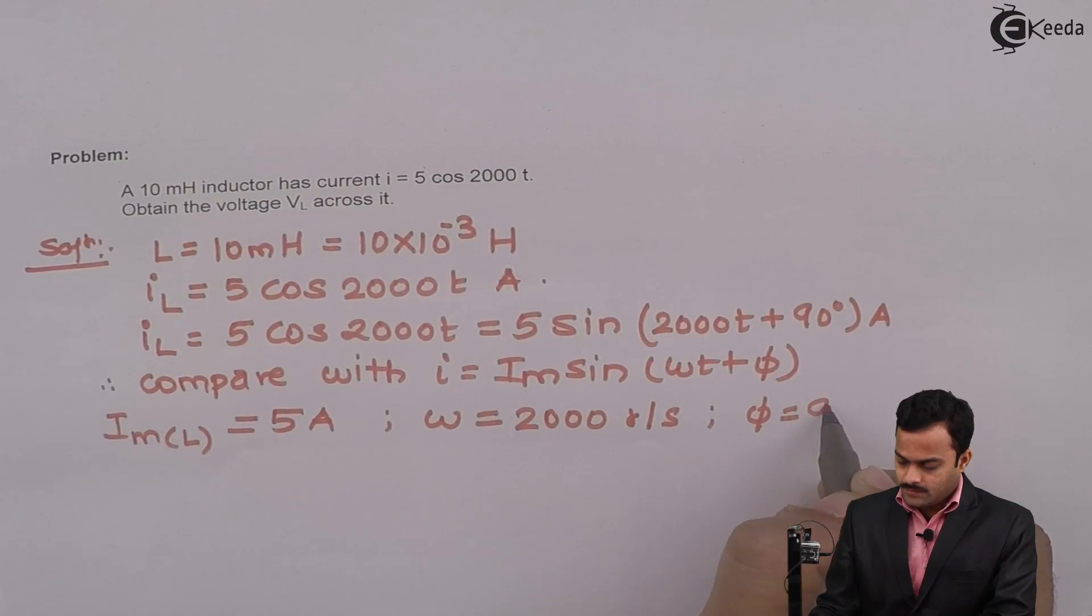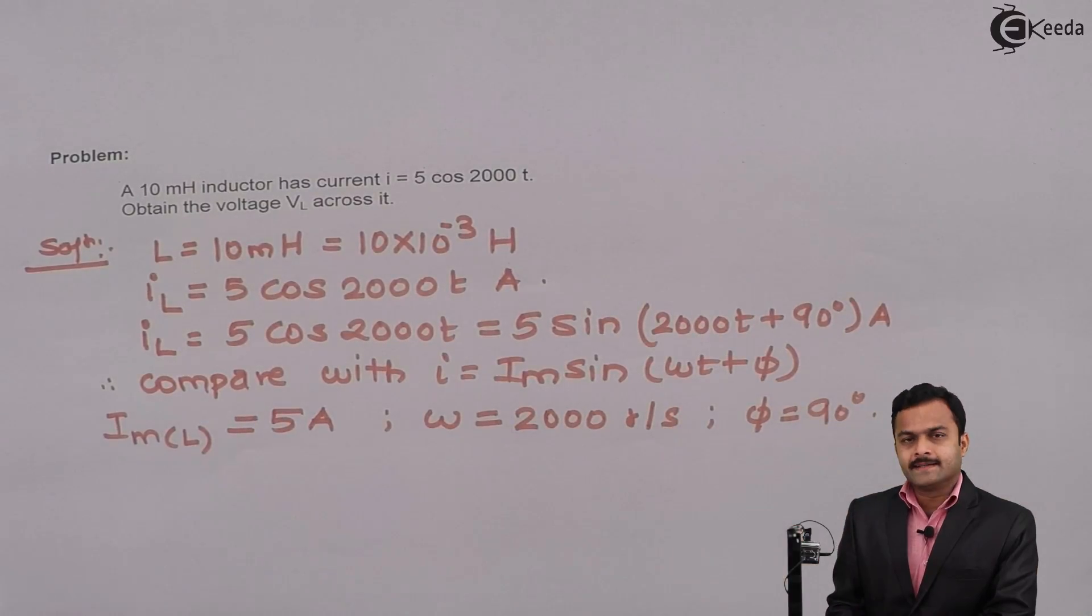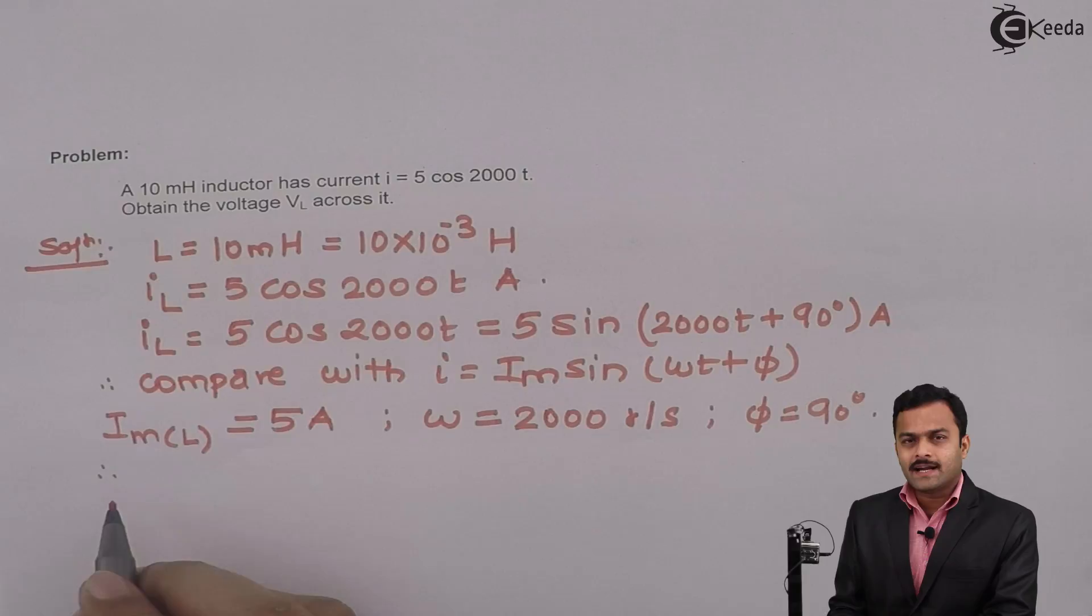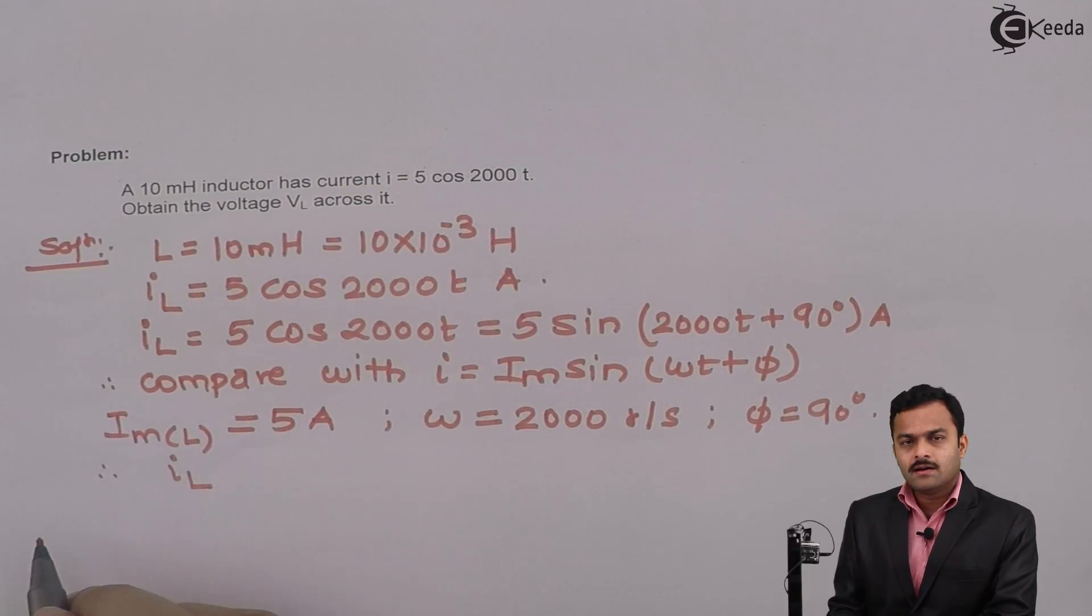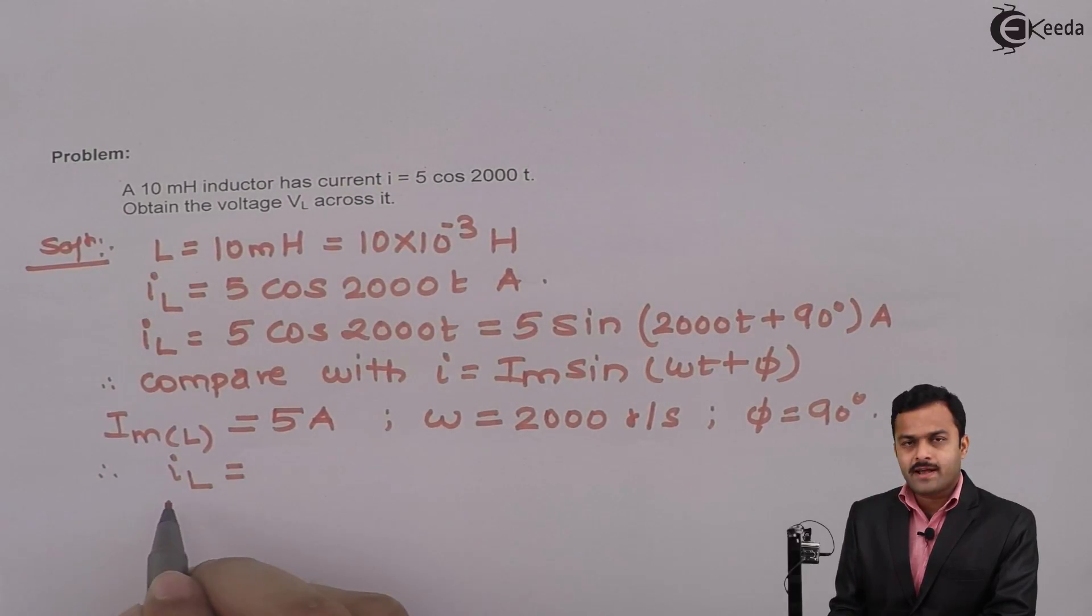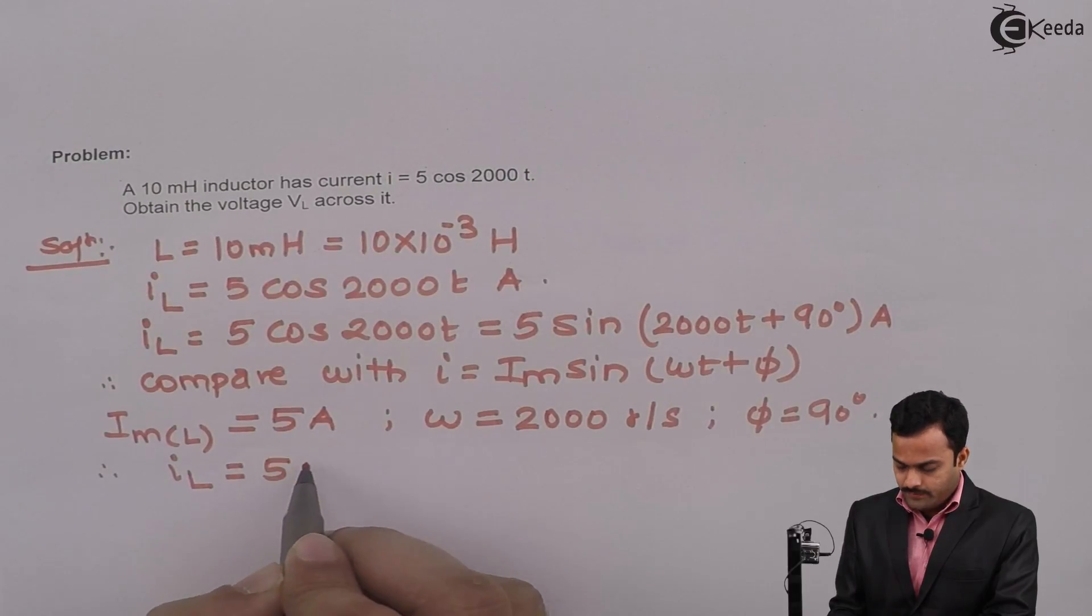So instead of writing the equation, I can consider this as a phasor: 5 at an angle 90 degrees ampere.